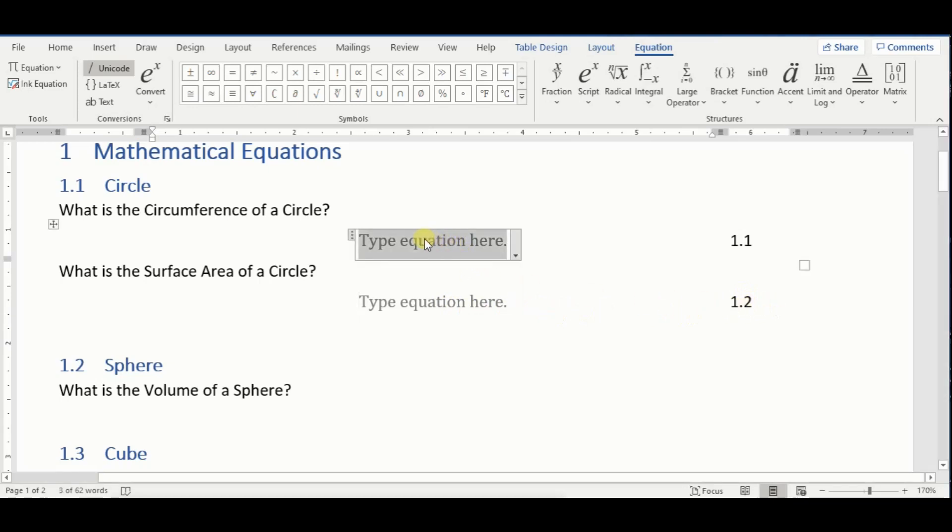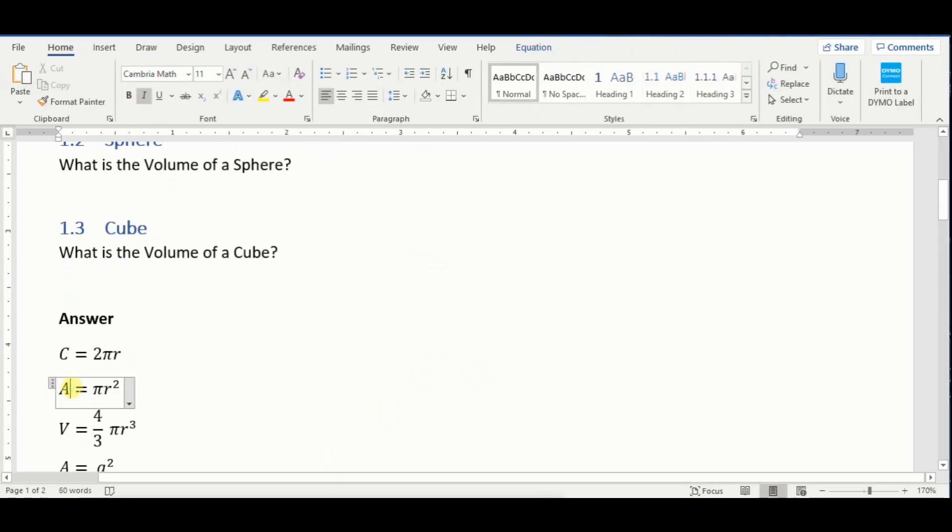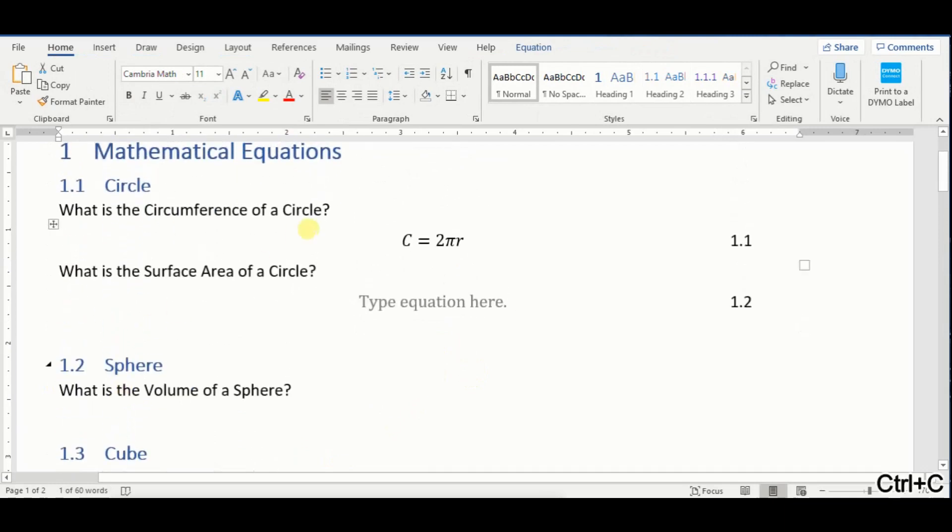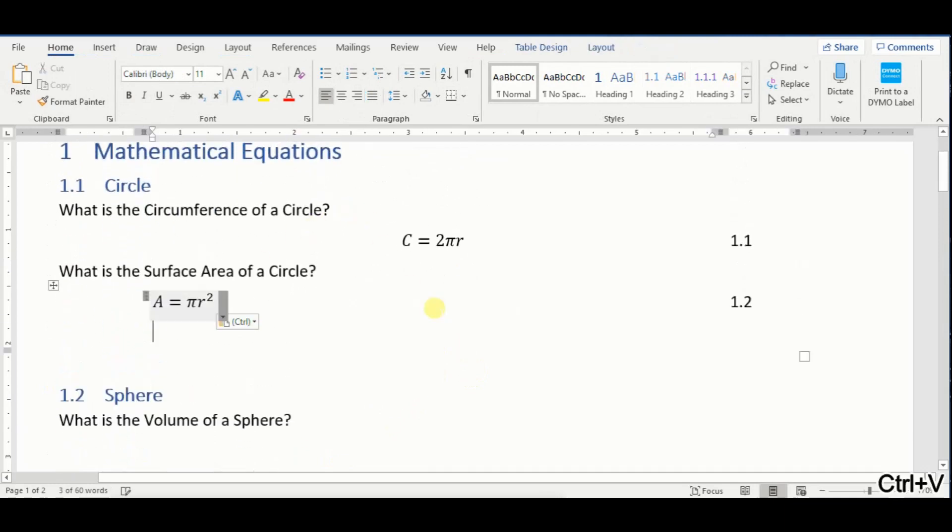Right, click on it, and then do C equal 2 pi is right here, somewhere right here, and then paste it here. Okay, and same thing, I can enter my equation there, I can just copy it from here, and then paste it here. And actually, I want this to be centered, so click on center.